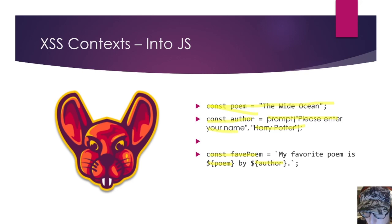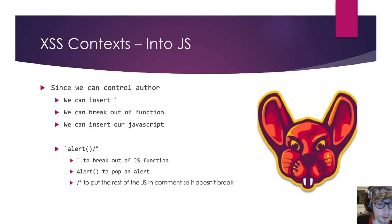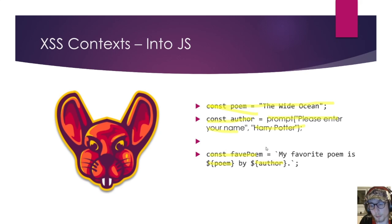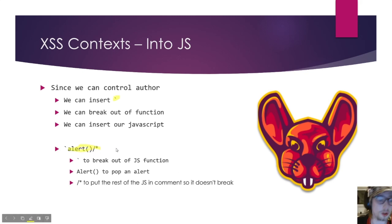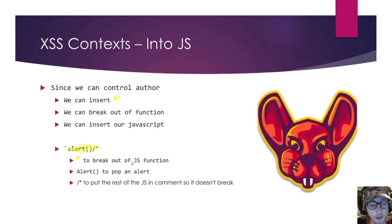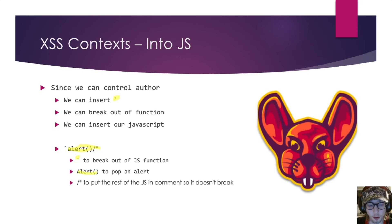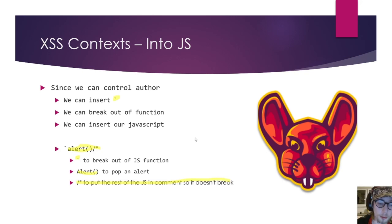We can insert a backtick — this specific character — which allows us to break outside of the JavaScript function. If we insert our own backtick, the complete JavaScript function gets broken and we can insert our own JavaScript code. Using a backtick as our attack vector breaks out of the function, then we execute an alert. Now, 'alert' is the most filtered word out there — try to use something different like 'confirm' instead. Then we put the rest of the code into comments so we don't break it.